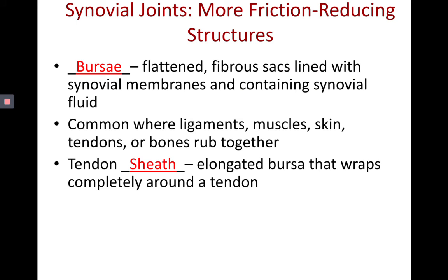Some other friction-reducing structures are bursae and tendon sheaths. A tendon sheath is an elongated version of a bursa, but both are there to decrease friction between structures that may rub together — things like ligaments, muscles, skin against tendons or bones. Bursae are more flattened and sac-like, filled with synovial fluid. The tendon sheath wraps completely around a tendon — think of it like a hot dog bun, with the tendon being the hot dog.